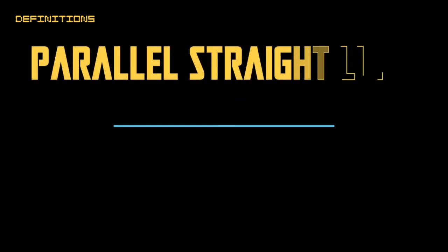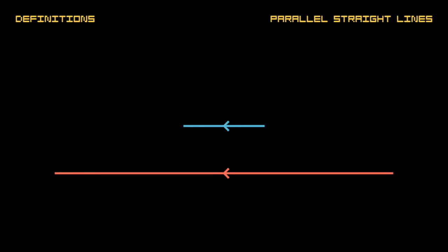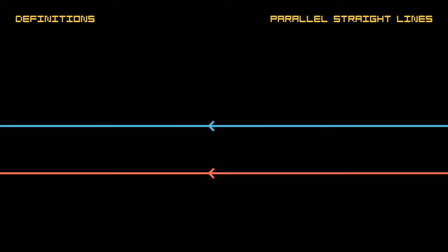Parallel straight lines are straight lines that, being in the same plane and being produced infinitely in both directions, do not meet one another in either direction. Parallel lines are sometimes marked with a V-shaped mark on a line.